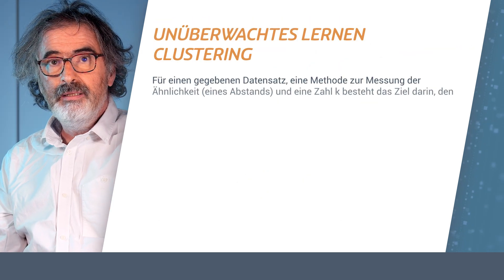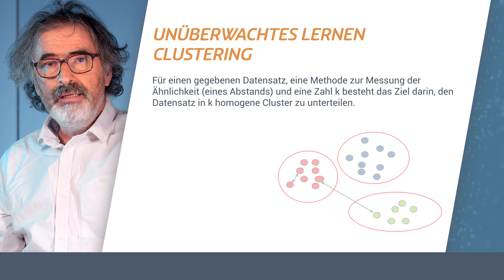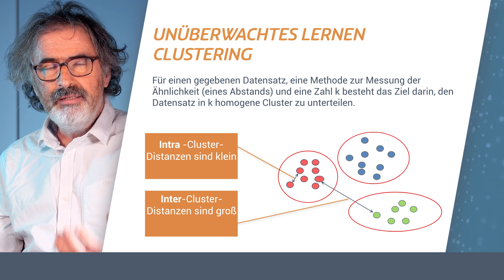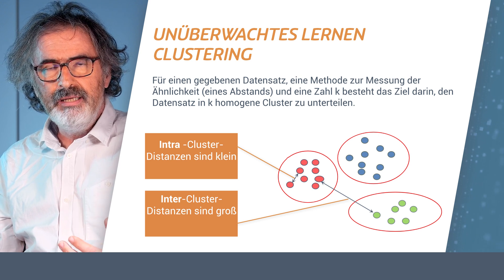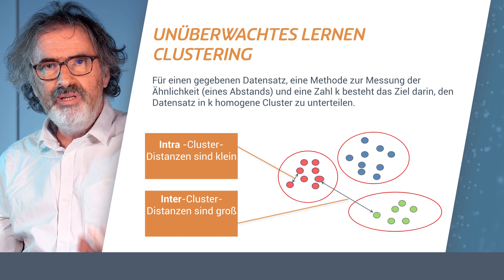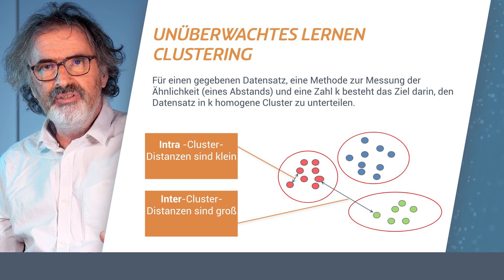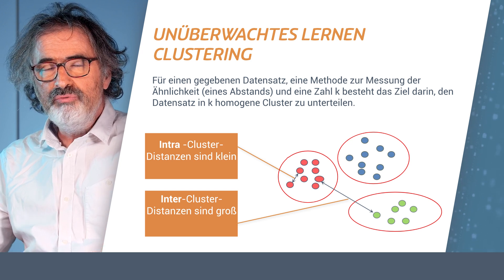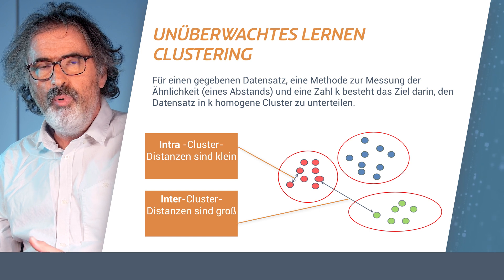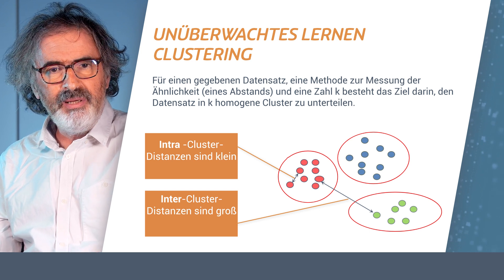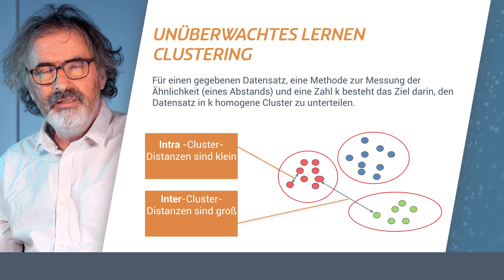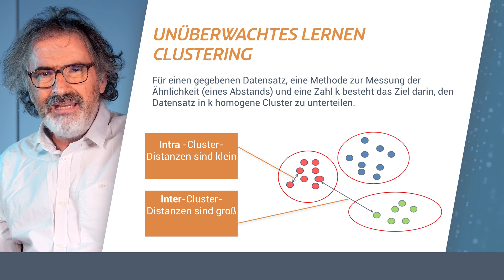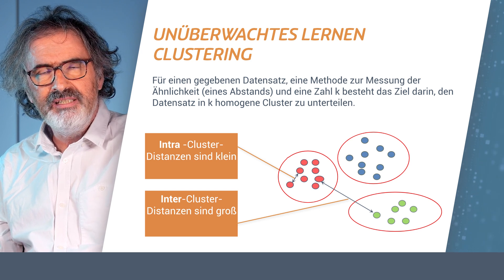Unsupervised learning, as opposed to supervised learning, is a case where the data from which we are learning doesn't have a known label. We don't know in advance a value associated with each element, so we have to somehow reorganize the data rather than obtain a value from it. A typical setting is called clustering. In clustering, we are given data and a way to measure similarity — this is called a distance.